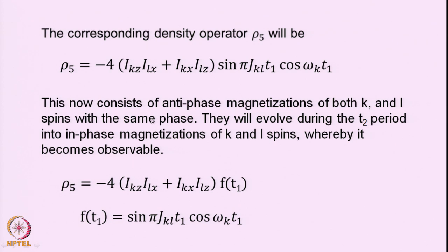To observe this, we apply the third 90-degree pulse, which transforms the double quantum operator to a single quantum operator — only single quantum leads to observable magnetization in the detection period. When we apply the last 90-degree pulse, rho_phi becomes: minus 4 times [iKz·iLx plus iKx·iLz] times sin(πJ_KL·T1) cosine(ω_K·T1). Now both terms — the cross peak and the diagonal peak — have the same kind of phase.